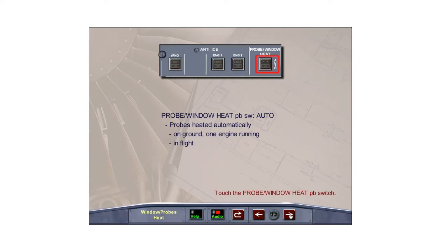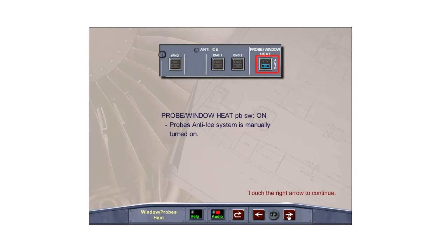Touch the probe window heat push-button switch. With the probe window heat push-button switch selected ON, the probes are heated at any time using low power on the ground and high power in flight. The TAT probes are not heated on the ground.